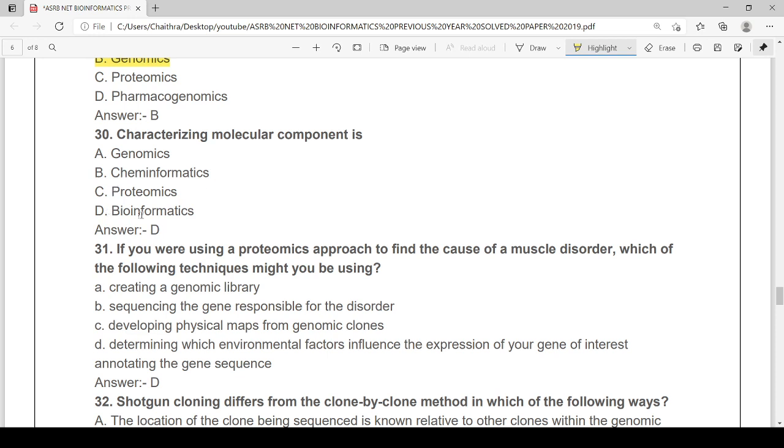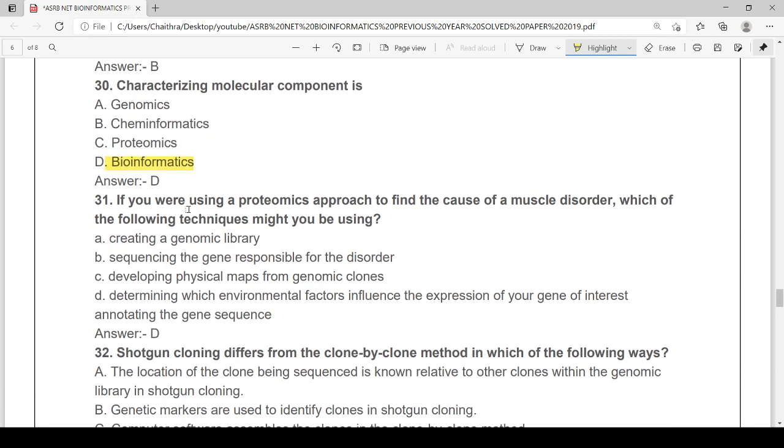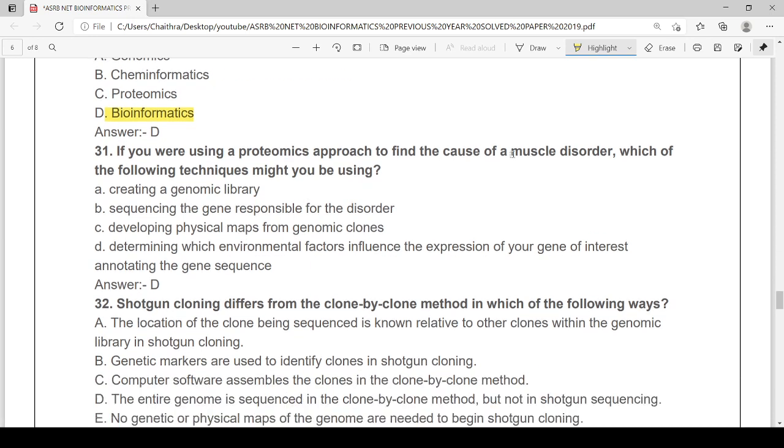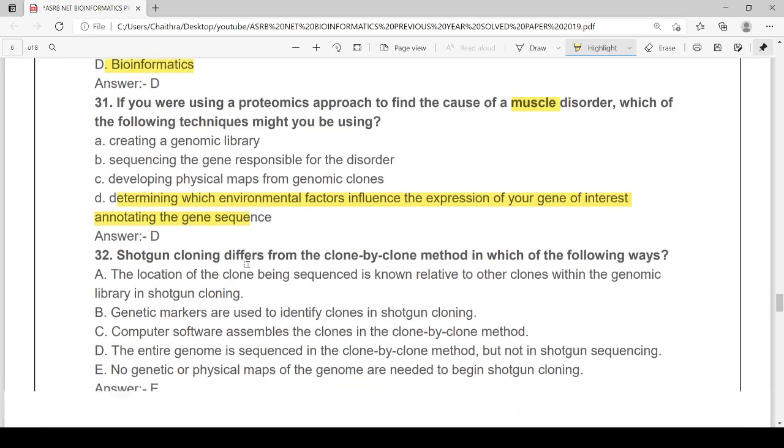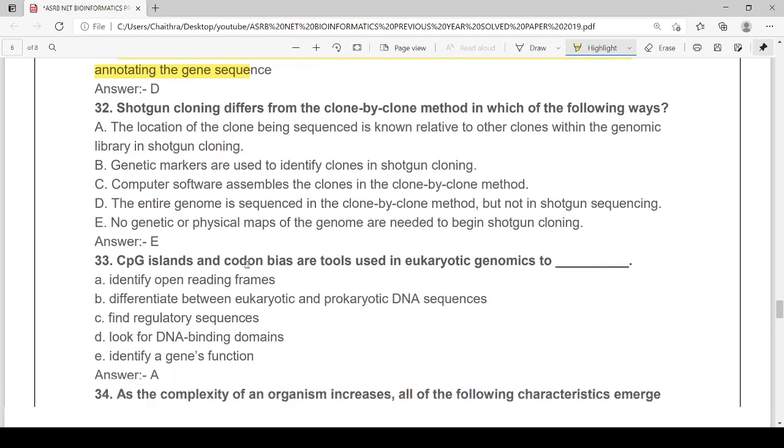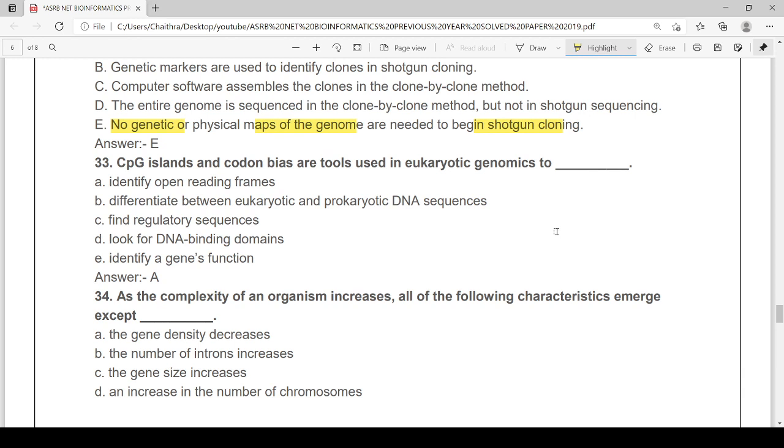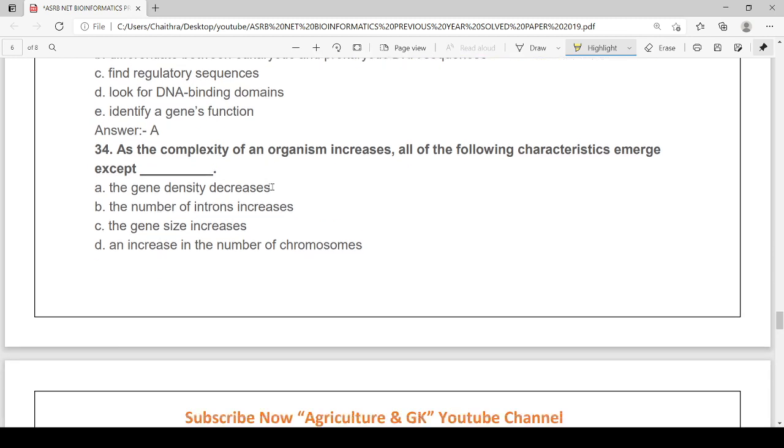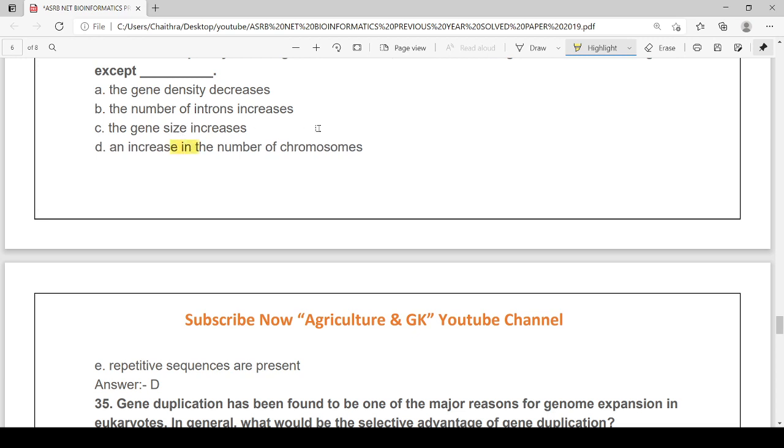Characterizing the molecular component is bioinformatics. If you are using the proteomics approach to find the cause of muscle disorder, which technique might you be using? Determining which environmental factors influence the expression of your gene of interest and annotating the gene sequence. Shotgun cloning differs from the clone-by-clone method in which of the following ways? No genetic or physical maps of genome are needed to begin shotgun cloning. CPG islands and codon bias are tools used in eukaryotic genomes to identify the open reading frames. As the complexity of an organism increases, all of the following characteristics emerge except an increase in the number of chromosomes.